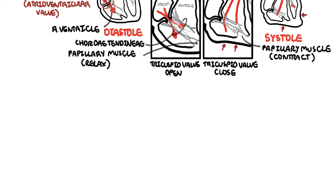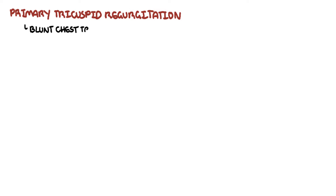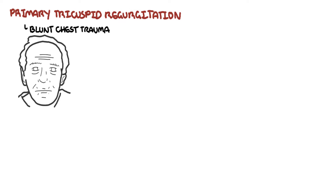Primary tricuspid regurgitation is less common. Causes include blunt chest trauma and carcinoid syndrome, where you have the presence of a carcinoid tumor, which has a very close association with tricuspid valve disease.